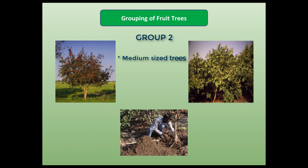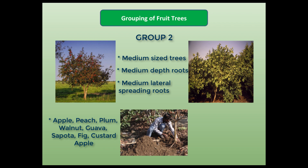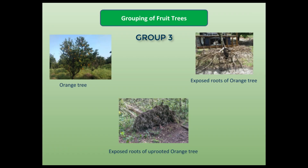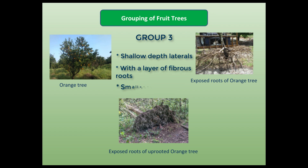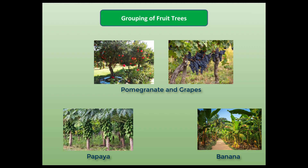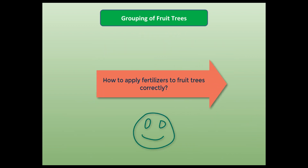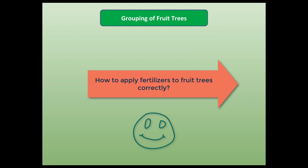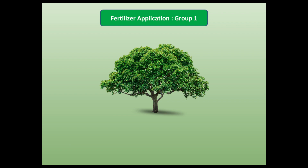In Group 2, let us put all medium-sized trees with medium depth roots and medium lateral spreading roots — like apple, guava, chiku or sapota, fig, peach, plum, pear, and custard apple. In Group 3, let us put all fruit trees with shallow depth laterals and a second layer of fibrous roots — crops like orange, mosambi, lime, lemon, and others. Other fruit trees like pomegranate and grapes, papaya, and banana are different from each other, so let us keep them in Groups 4, 5, and 6 respectively.